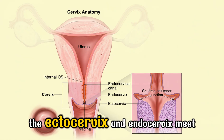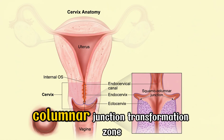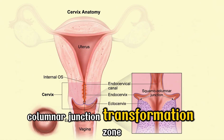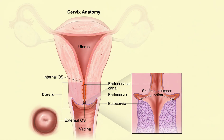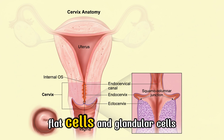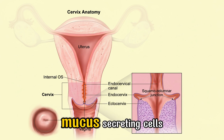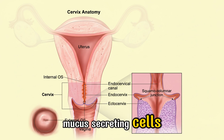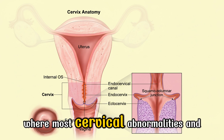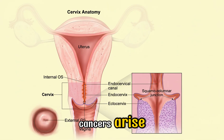The ectocervix and endocervix meet at the squamocolumnar junction — the transformation zone — containing squamous cells (flat cells) and glandular cells (mucus-secreting cells), where most cervical abnormalities and cancers arise.